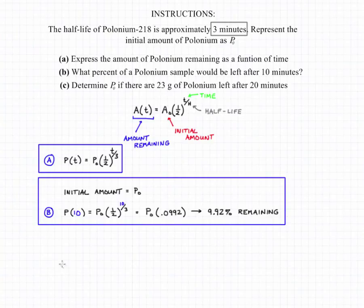Now for part (c) we're being asked to go backward with our equation. We're given the amount that's left over and we're told we want to know how much was there originally. So we know that we left the polonium there for 20 minutes and we want to know how much we started with if we ended up with 23 grams.